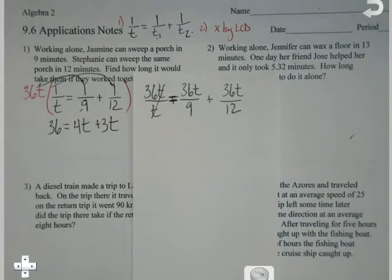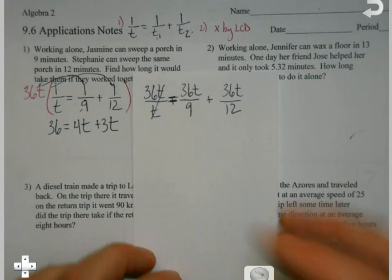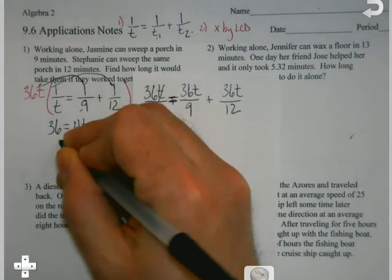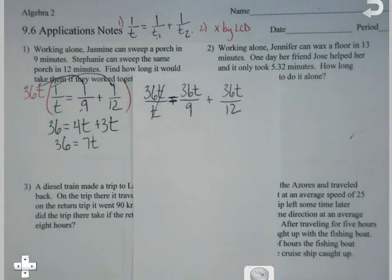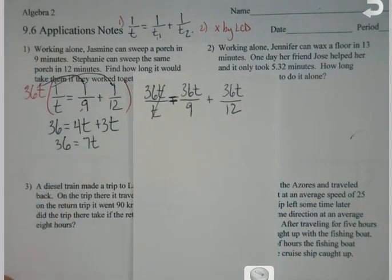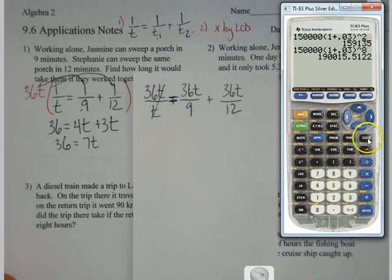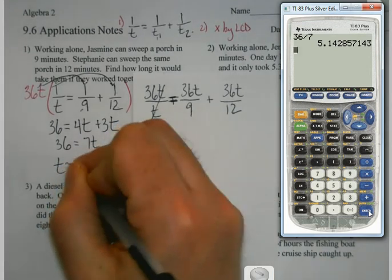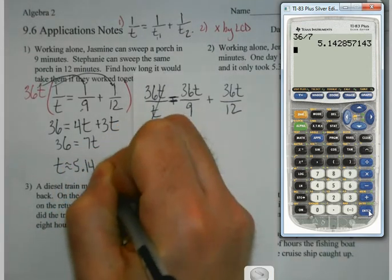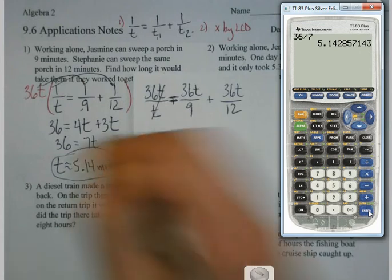So at this point, I go, okay, 4t + 3t = 36. 7t = 36. Because the time I get with them together should be shorter than them working alone. So my answer better be below 9 minutes, or I'm in trouble here. So let's see. 36 divided by 7. So about a little over 5 minutes it would take if they worked together, which is sensible, because it should take a shorter amount of time if two of you are doing the same thing.